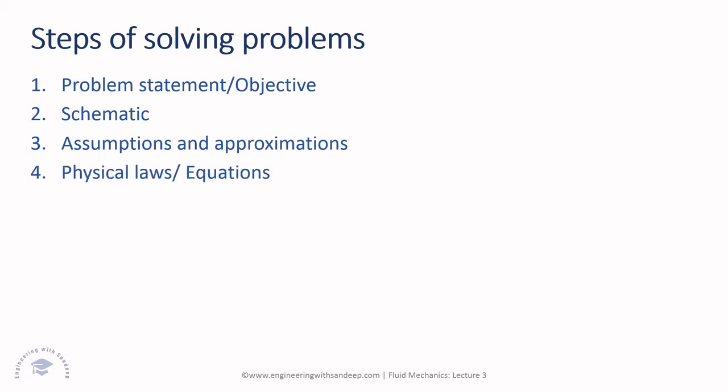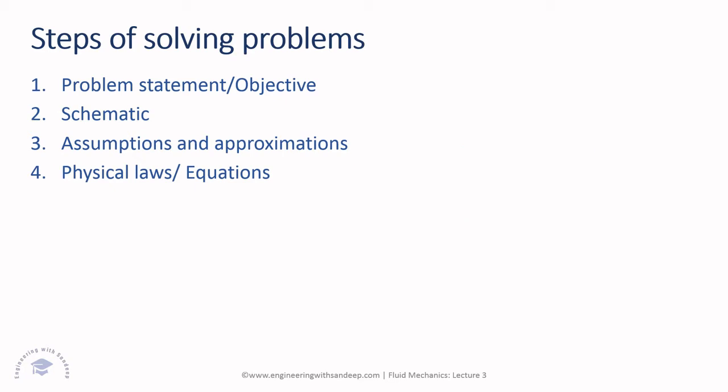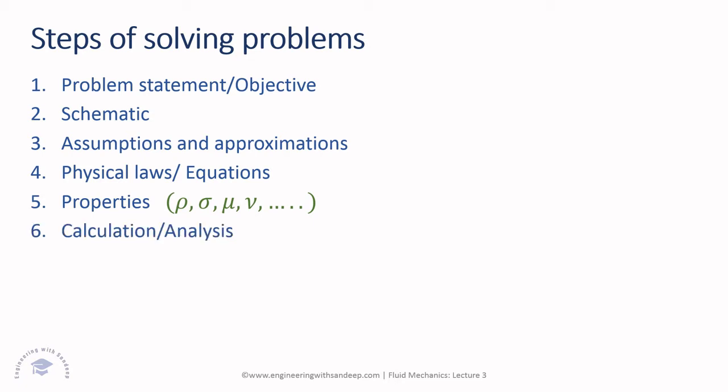Once assumptions are done, find the right equations or physical law to solve the problem. Then write down all the properties required, preferably in SI units, like density, viscosity, etc. If you do this much, 70% of the task is completed. The next step is to do the calculation, find the answer, and arrive at a conclusion.